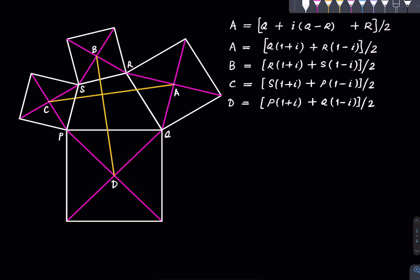So therefore B minus D, or let's say B minus D, would be, it's just a computation, it is (R minus P) times (1 plus i) plus (S minus Q) times (1 minus i) divided by 2. And A minus C is (Q minus S) times (1 plus i) divided by 2.